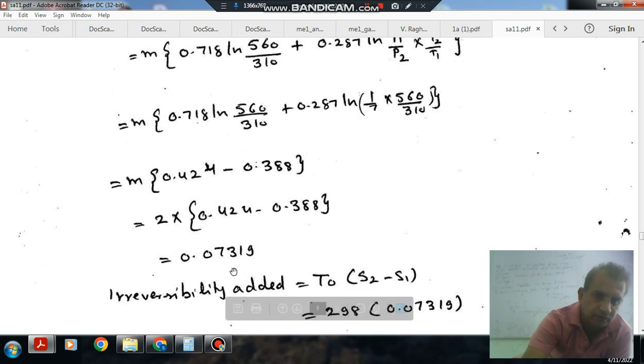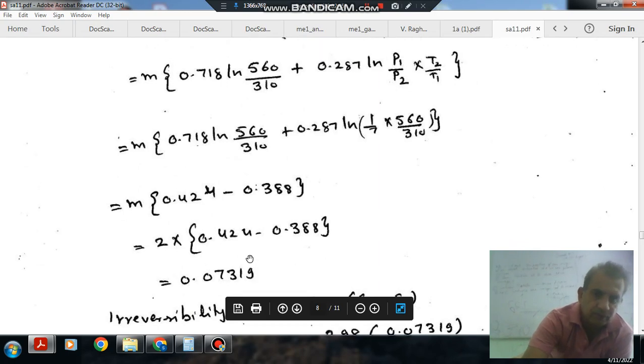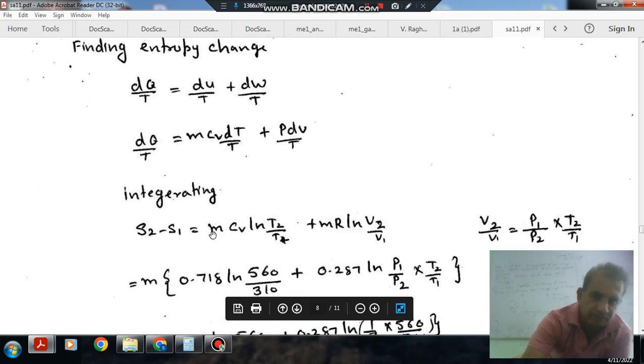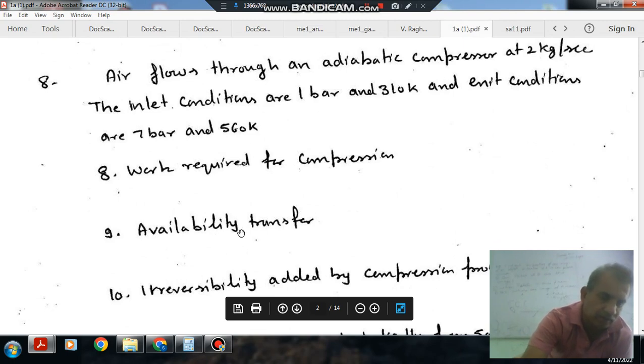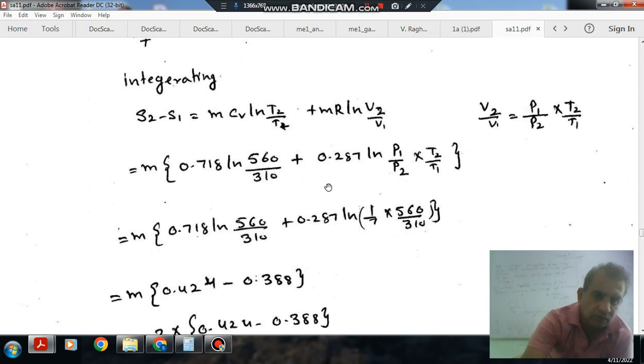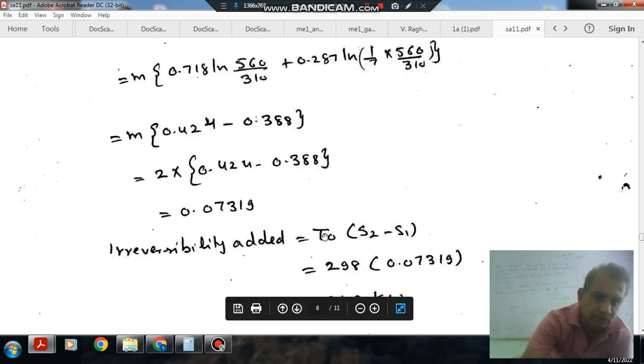We have M times the calculated values. So T0 is 310. For T0 as 298, we get 21.2 kJ per kg.